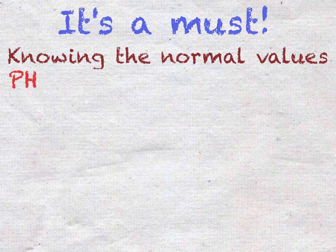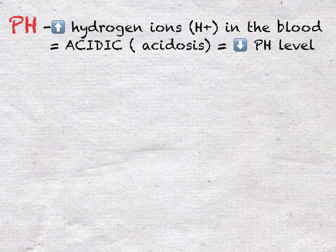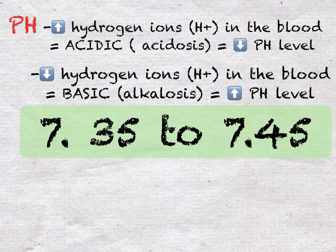The first value is the pH, which measures how many hydrogen ions are in the blood. Blood with a high number of hydrogen ions is acidic and has a low pH. Blood with a low number of hydrogen ions is basic and has a high pH value. The normal value for pH ranges from 7.35 to 7.45.